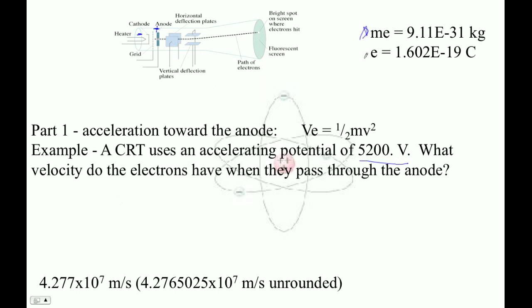Now, you'll need the mass of the electron from your data packet, the charge on an electron, and then we'll use this formula, which is in the data packet. So, VE is one-half mv squared. If we solve that for V, this is velocity, that's accelerating voltage.